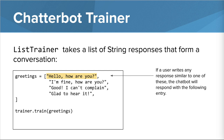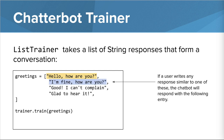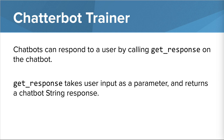For example, if a user writes 'Hello, how are you?', the chatbot will respond with the following entry, which is 'I'm fine, how are you?'. Chatbots can respond to a user by calling GetResponse on the chatbot. GetResponse takes user input as a parameter and returns a chatbot string response. Let's head over to the live editor to see this in action.